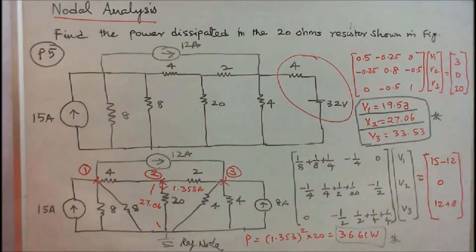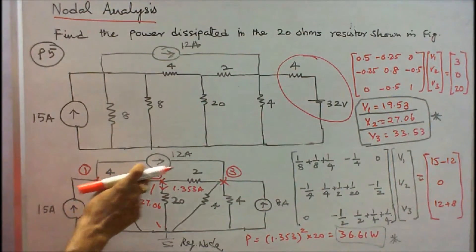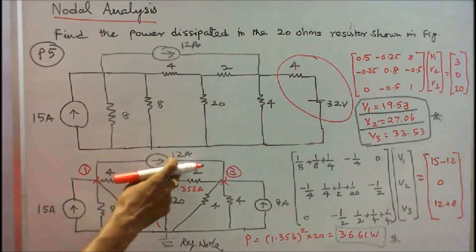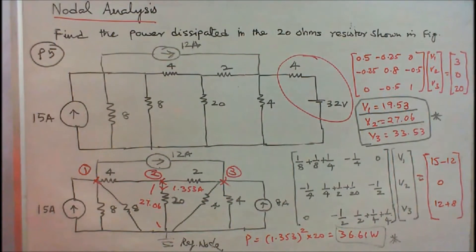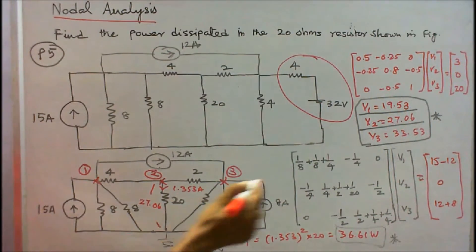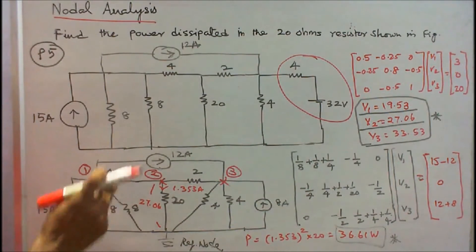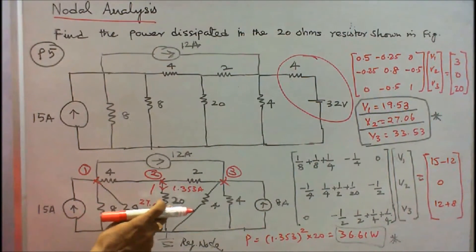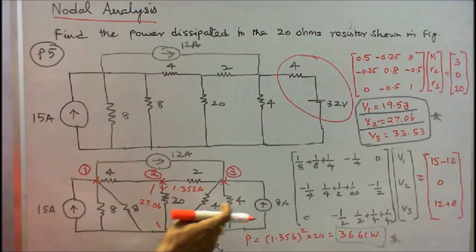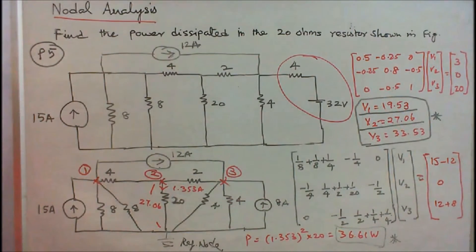Forming the nodal conductance matrix: diagonal element at node 1 is 1/8 plus 1/8 plus 1/4 equals 0.5; at node 2 is 1/20 plus 1/2 plus 1/4 equals 0.8; at node 3 is 1/2 plus 1/4 plus 1/4 equals 1. The off-diagonal elements: common resistor between nodes 1 and 2 is 4 ohms, giving minus 0.25; no common resistor between nodes 1 and 3, giving 0; common resistor between nodes 2 and 3 is 2 ohms, giving minus 0.5.